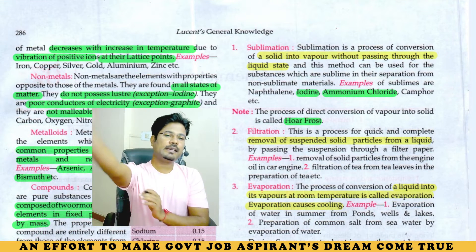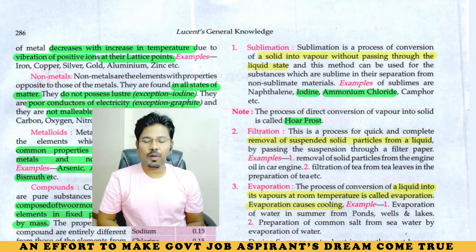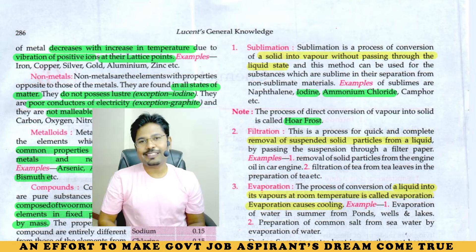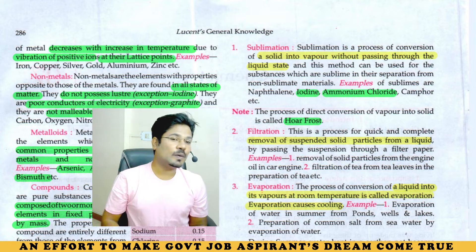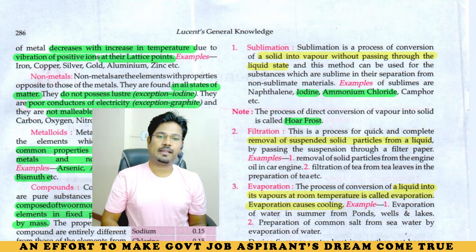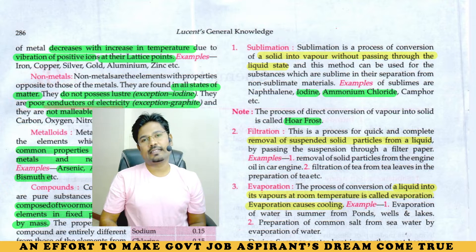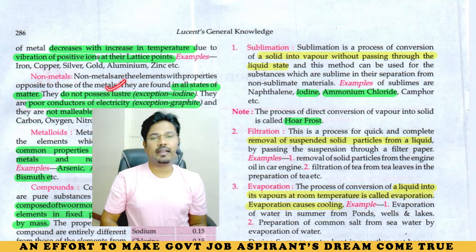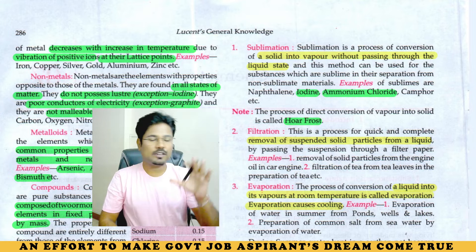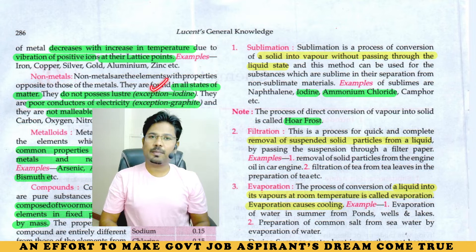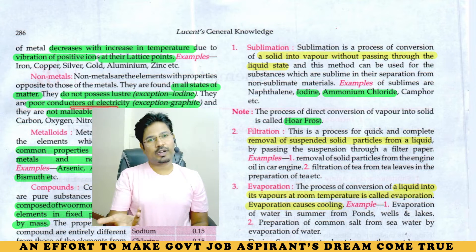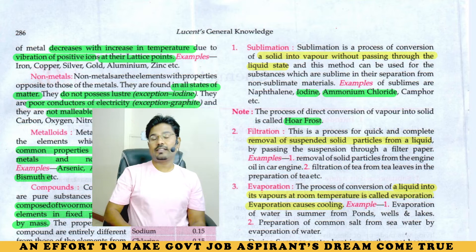Non-metals are elements with opposite properties to metals. Metals are solid, but non-metals are found in all states of matter. Non-metals are poor conductors of electricity — exception is graphite. Non-metals do not have luster — exception is iodine, which reflects light though it is a non-metal.